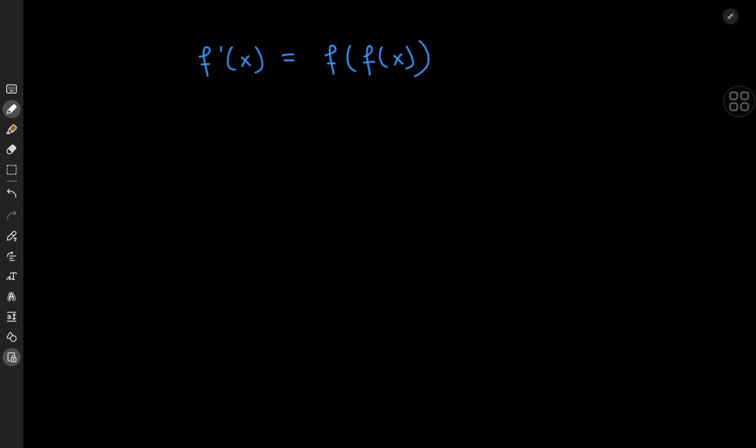How exactly do we approach a solution for this structure? Since this is a brand new case, let's treat it the same way we would any differential equation on the first day of our differential equations class. Recall that we try fitting solutions, so let's try fitting a polynomial solution here. I'll assume the solution is of the form y equals alpha times x to the beta, where alpha and beta could be complex numbers.